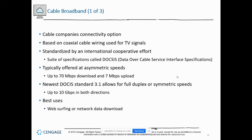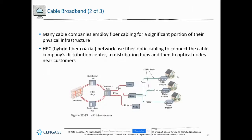Cable uses the Data Over Cable Service Interface Specifications, or DOCSIS. The slides are a bit old — they say the max was up to 70 megs download with seven megs upload — but now following DOCSIS 3.1, it allows up to 10 gigabits. The cable network diagram shows the head end, distribution hubs, nodes connected by fiber, and then coax or fiber going into neighborhoods. Cable is a shared concept — you're on the same network sharing data — whereas DSL gives you a direct connection that only you are on.